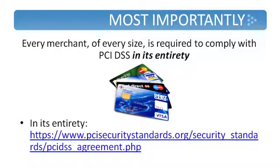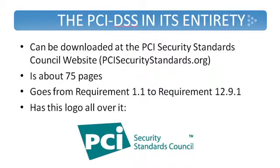You can reach the standard at the following URL and actually download it from the Security Standards Council and read through every requirement on your own. The document itself is about 75 pages, going from requirement 1.1 to requirement 12.9.1, and throughout it will say PCI Security Standards Council — that's how you know you're in the right place.